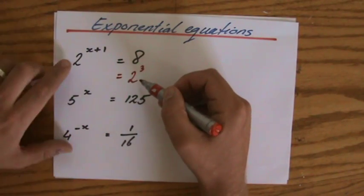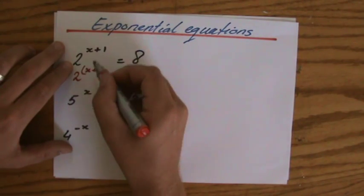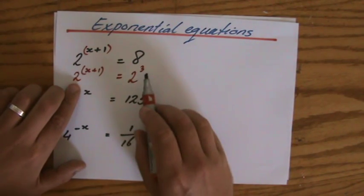So I have manipulated the question. Let me just write there x plus 1. Probably should have some brackets there. So 2 to the power (x plus 1) is the same as 2 to the power 3.